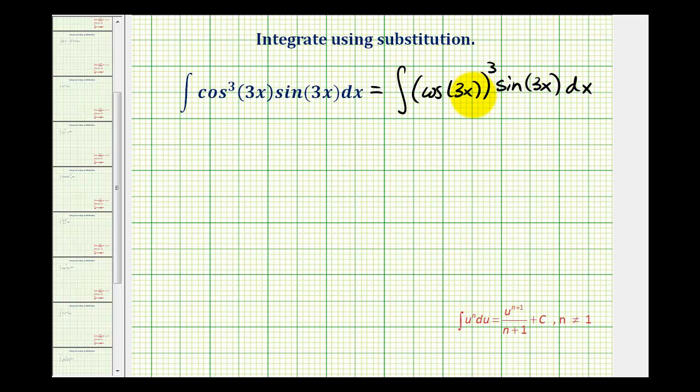In this form, it's much easier to see that we have a function raised to a power. Therefore, we'll let u equal the inner function of this composite function here. So, we'll have u equals cosine 3x.